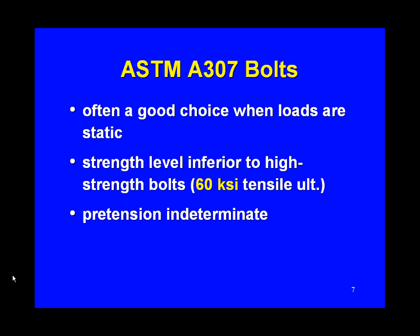A307 bolts are often a good choice when loads are static. The strength level is inferior to the ones we're going to discuss in a moment, and its tensile strength is about 60 KSI. If we need to have pretension in our joints, the amount of pretension will be indeterminate for A307 bolts.